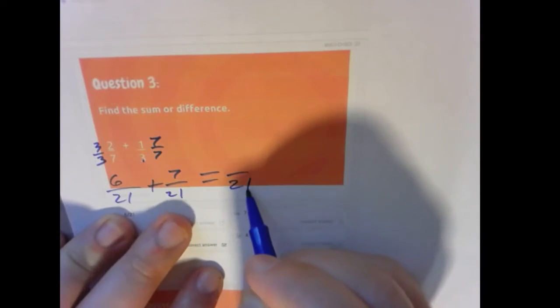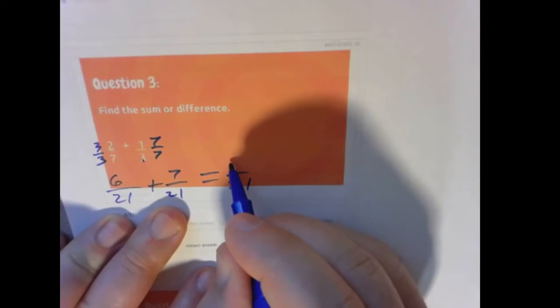1 times 7 is 7, 3 times 7 is 21. So check it out. Now we have common denominators of 21, and we add 6 and 7 to make 13. So 13 over 21 is the final answer.